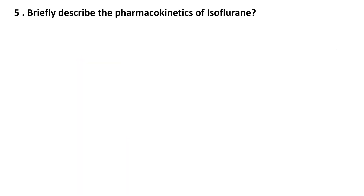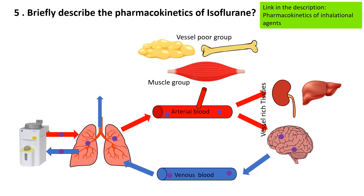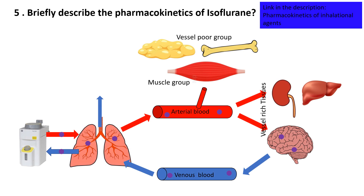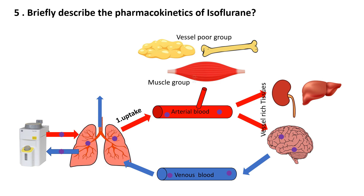Briefly describe the pharmacokinetics of isoflurane. All inhalational anesthetics follow similar pharmacokinetics principles, including uptake, distribution, metabolism, and elimination. Isoflurane is inhaled through a vaporizer mixed with carrier gases, with rapid alveolar transfer into the blood due to its low blood solubility.